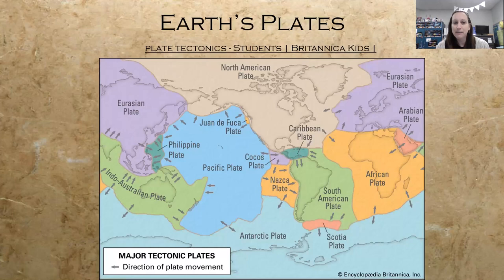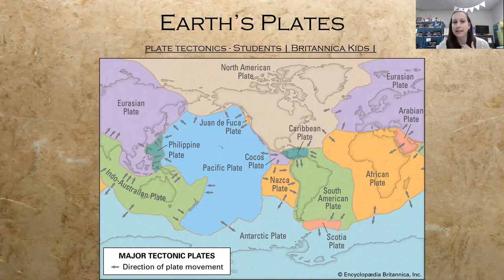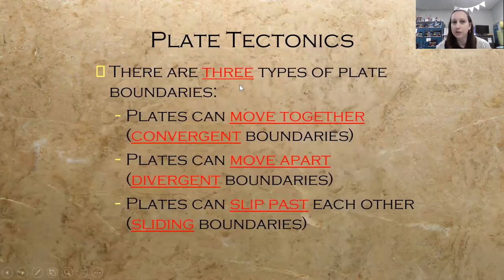Here is a major tectonic plates map borrowed from Britannica Kids. I liked it because it shows the direction of plate movement — some are going toward each other, colliding; some are diverging, going away from each other; and some are sliding past each other, as plates are constantly, gradually in motion.